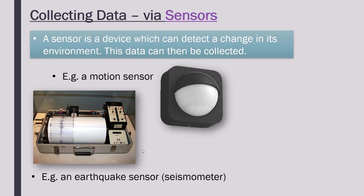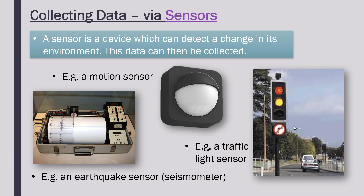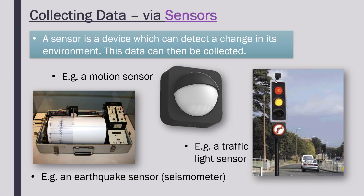Another example is a seismometer, which collects data about tremors in the ground — used for earthquakes. You've likely seen these in movies: a jagged line, and if it suddenly gets very jagged, there may be an earthquake. A third example is a traffic light sensor, similar to a motion sensor, detecting if a car is waiting in front of the light so it won't stay on green if no one is there. All of these are devices left to collect one distinct change in their environment.